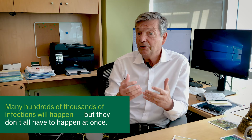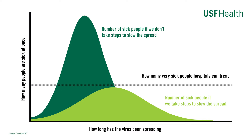So flattening the curve means preventing the exponential phase. And once, unfortunately, you reach the exponential phase, you really want to obtain a flattening of the curve with a plateau and then a decrease.